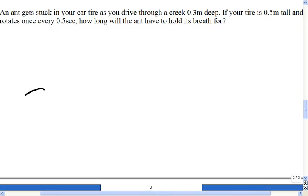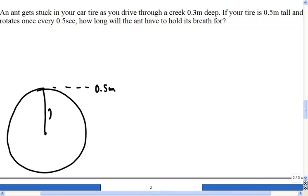So here's my tire, and it says the tire is a half meter tall, so if that's 0.5 meters, then I can work out that this is a 0.25 meter radius, and of course it touches the ground here at 0 meters. Now, it tells me that the creek that we drive through is 0.3 meters deep, so there's sort of what the creek would look like.